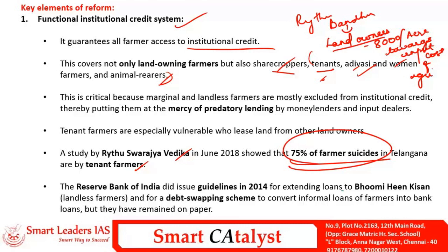Structural changes providing inclusive coverage to sharecroppers and tenant farmers are needed. The Reserve Bank of India in 2014 provided loan-swapping facilities for landless farmers, where informal credit taken by landless farmers would be refinanced and taken over as formal credit by the bank. However, this has not been implemented on the ground and exists only on paper. Steps should be taken to implement these guidelines.